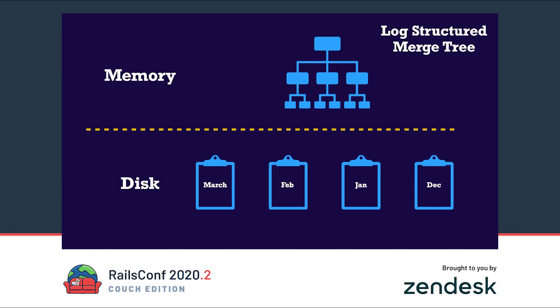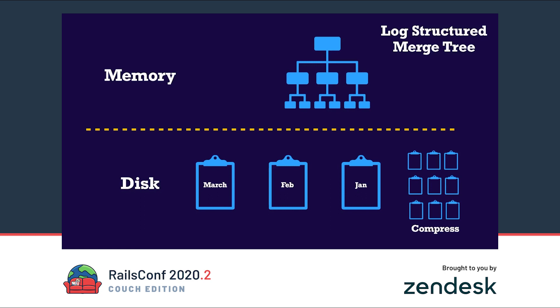Why are time series databases better for high-volume write applications? Instead of a B-tree they use a data structure called a log-structured merge tree under the hood. A log-structured merge tree consists of two elements: a sorted tree in memory which accepts new writes, and whenever this tree gets too big we dump it into a log file on disk. The log files on disk are sorted by time and contain an index so we can search them efficiently. Most time series databases already implement a retention policy which does garbage collection and deletes old log files, and also handles compressing and downsampling, making it more efficient than a relational database.